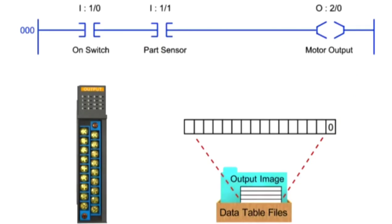In the next step of the scan cycle, the PLC executes the program one instruction at a time. The values of the output table are changed based on the status of the inputs.